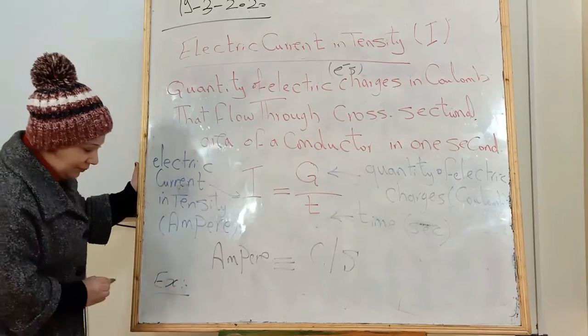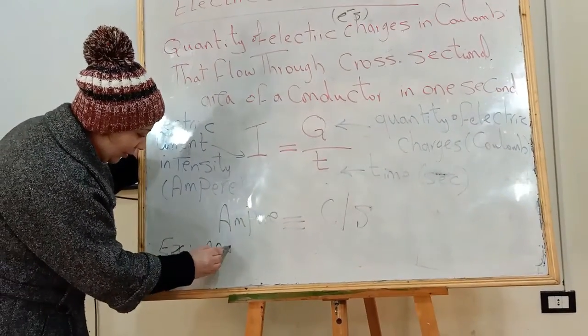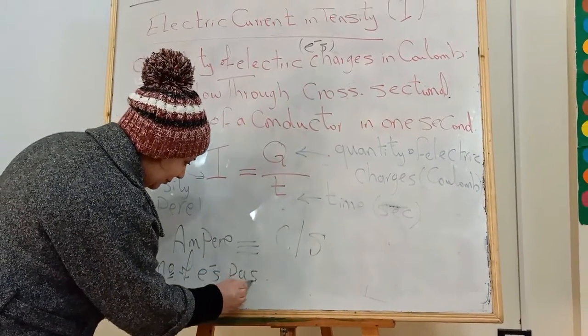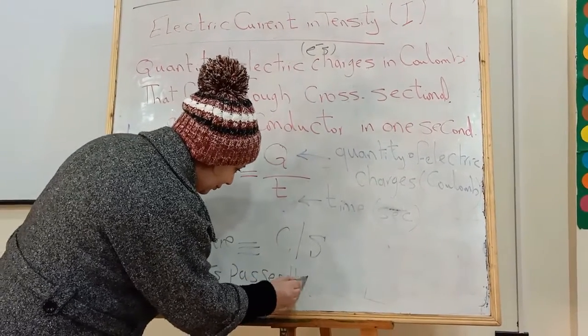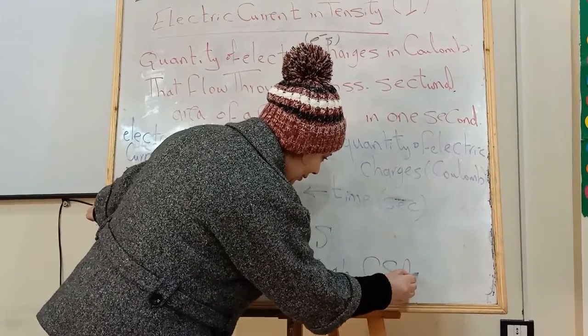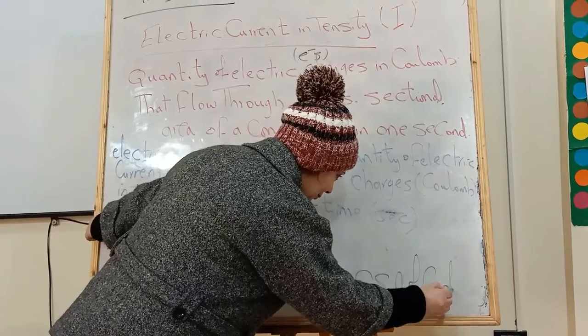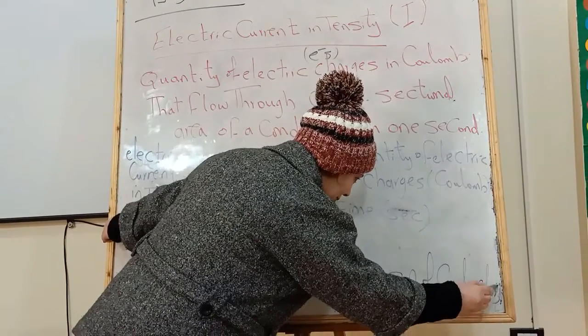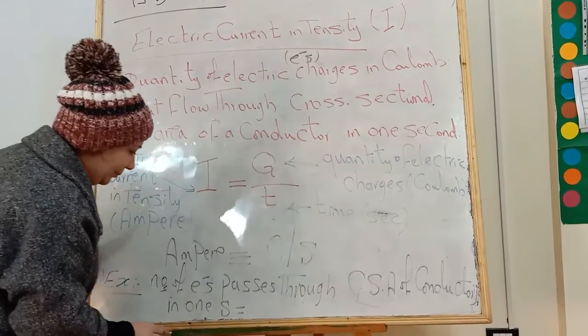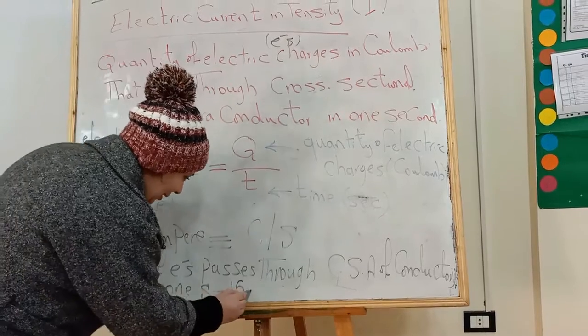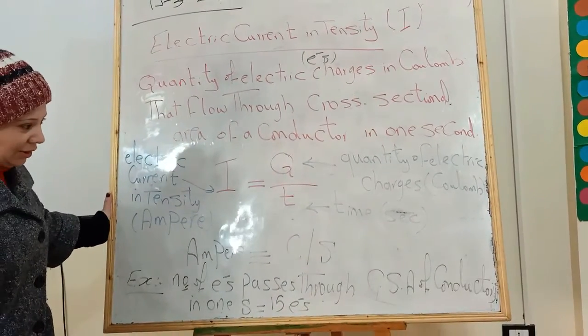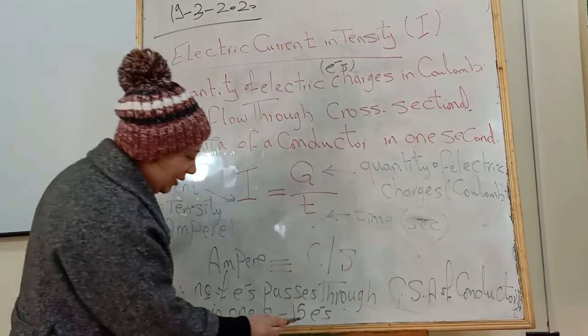Example: Number of electrons passing through cross-sectional area of conductor in one second equals 15 electrons.